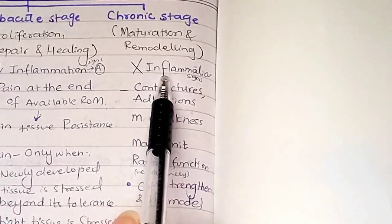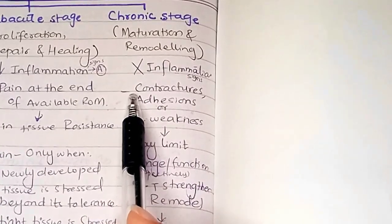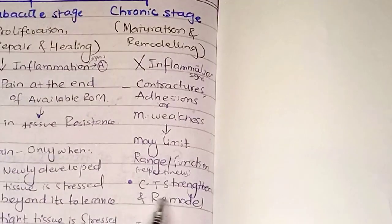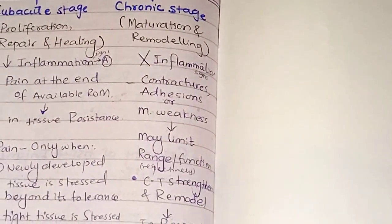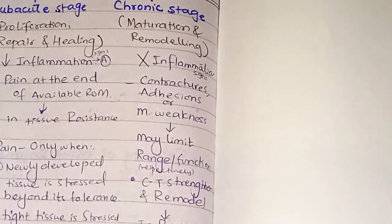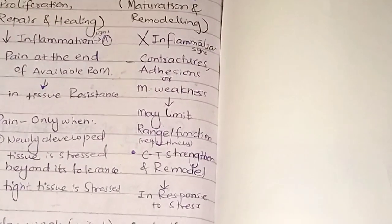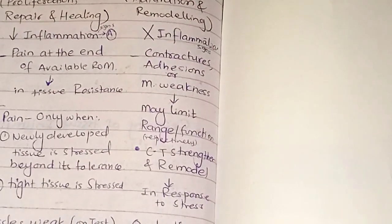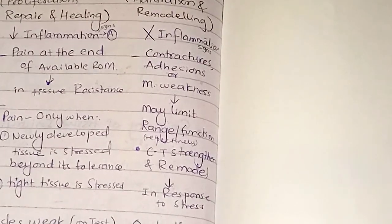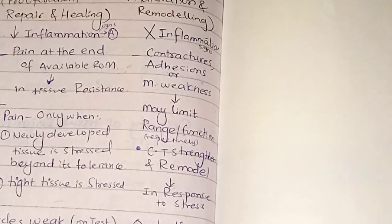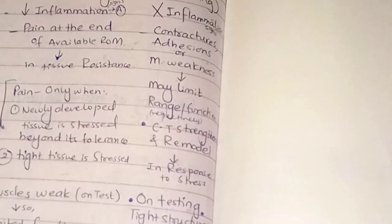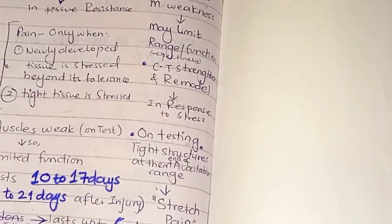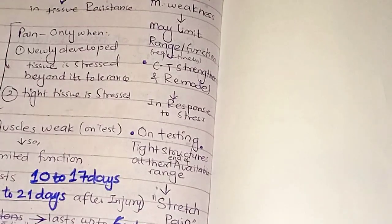We can observe contractures, adhesions, and muscle weakness in the chronic stage, which can limit the range and function of the muscles. The connective tissue strengthens and remodels in response to stress. On testing, when tight structures are tested at the end of their available range, the patient experiences stretch pain — this pain is felt approximately halfway through the tissue resistance. Function limitation is due to muscle weakness, poor endurance, and poor neuromuscular control.